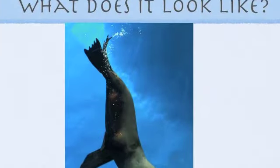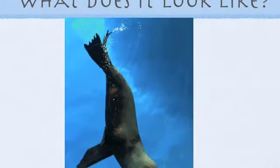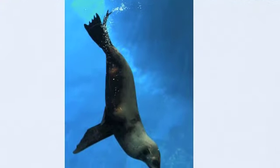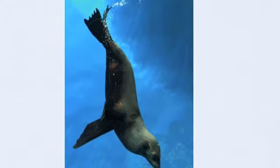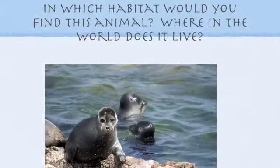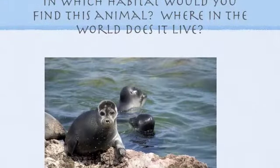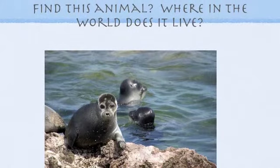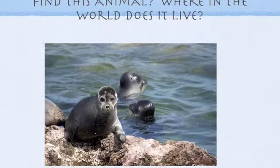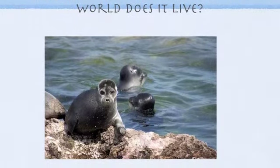A seal can be the colour grey and brown. It can have smooth skin too. Seals can live in the North Atlantic Ocean and the Pacific Ocean.